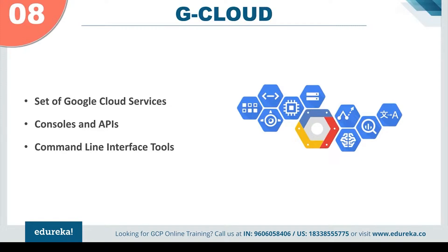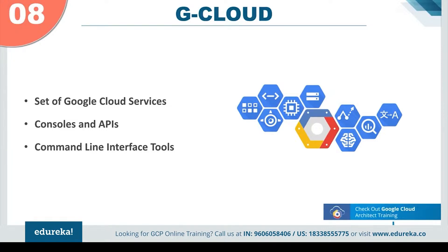Coming up to reason number eight, we have the Google Cloud, which is the G Cloud. G Cloud is basically the set of Google services that can be integrated with one another to create applications and run websites. They are very easy to work with — you can use them separately as well as together for different types of applications according to your needs. Google stands out compared to other cloud providers as they specialize in modularity. You can use different pieces of the Google Cloud into various products and mix and match these pieces according to your requirements.